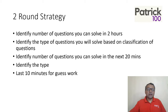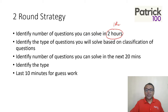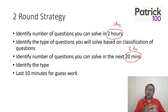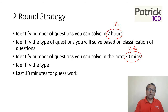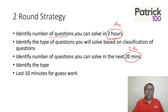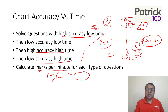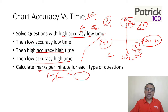Now, the two-round strategy. I am breaking it up as first round: two hours, second round: 20 minutes — but you can break it up however you want, maybe one and a half hours and one hour. In two hours, identify the number of questions you can solve. Let's say I can solve 100 questions in the first two hours — 60 questions which are high accuracy, low time and 40 questions which are low accuracy, low time. Focus on these 100 questions and solve them in the first round.